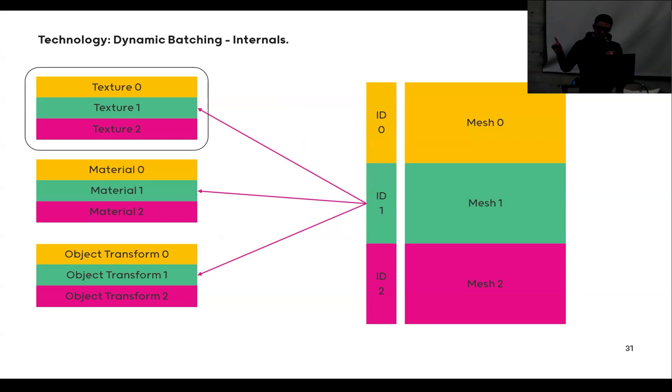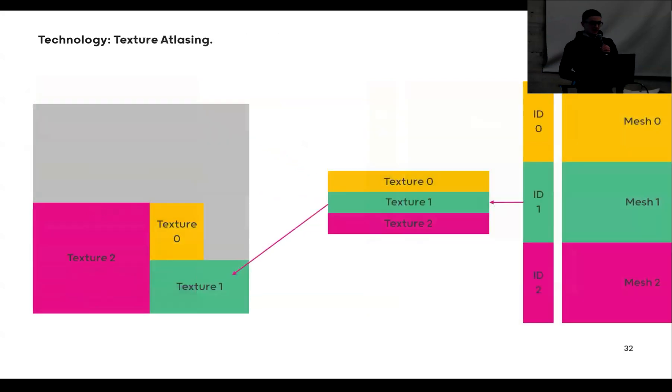We only have time to look into one of these, but we'll have a look at how the texture atlasing works. So we have to combine all the textures into one to still be able to use it with a mesh batch.